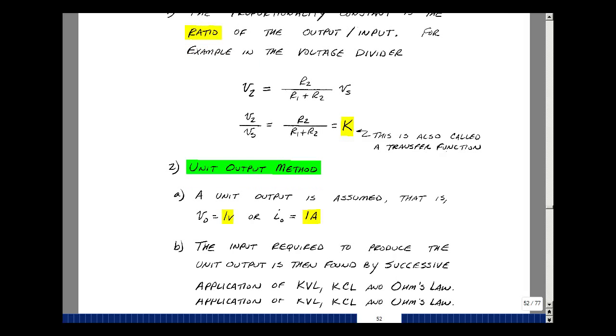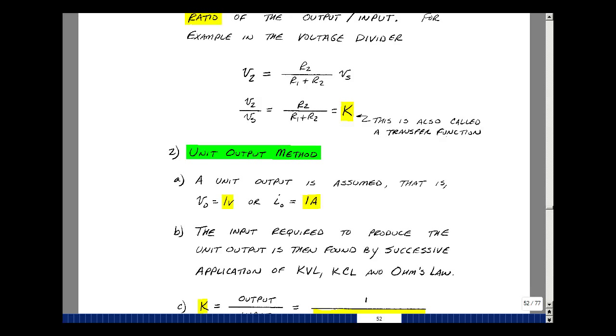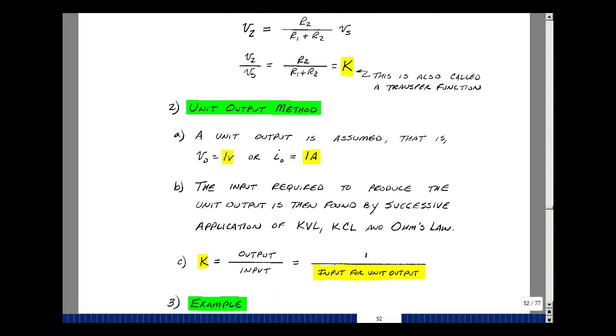The proportionality idea can be used to solve certain classes of problems. It's called the unit output method. What we're going to do here is we're going to assume that the output, whether it's a voltage or a current, is just equal to 1. Then we'll apply Kirchhoff's voltage law, current law, and Ohm's law to solve for the input that would produce that output.